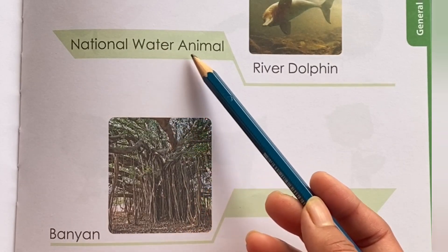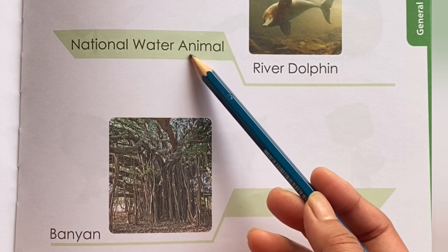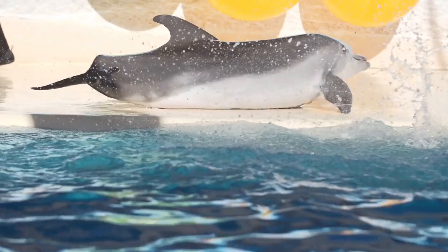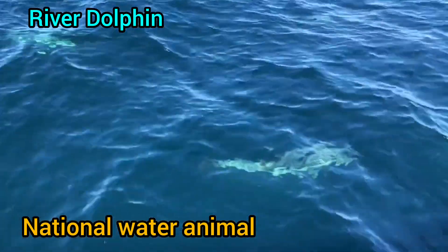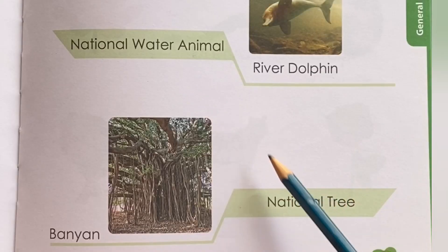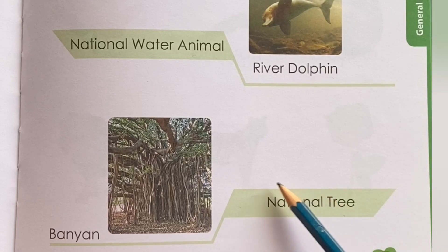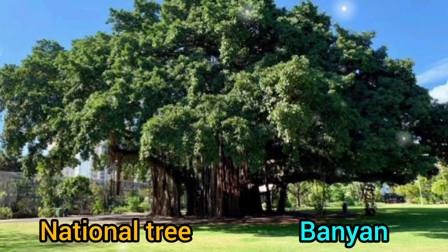National Water Animal — what is our national water animal? River Dolphin is our national water animal. National Tree — what is our national tree? See the picture. Banyan is our national tree.